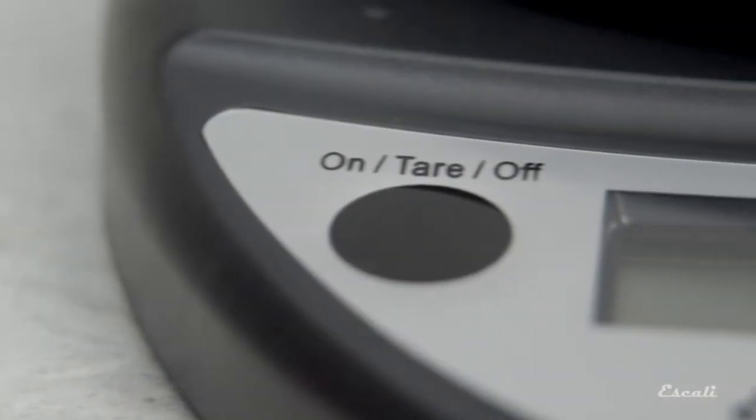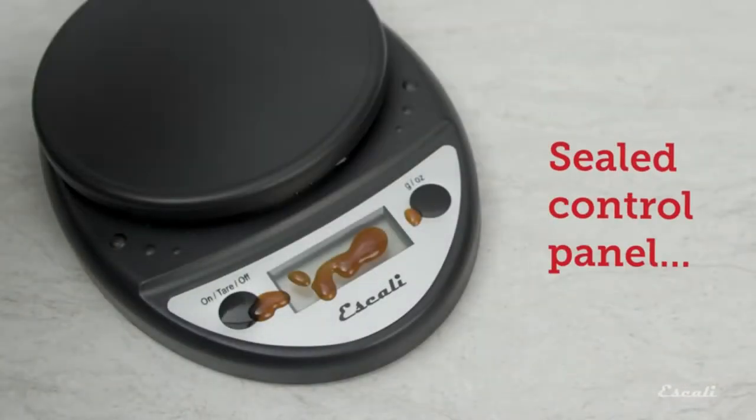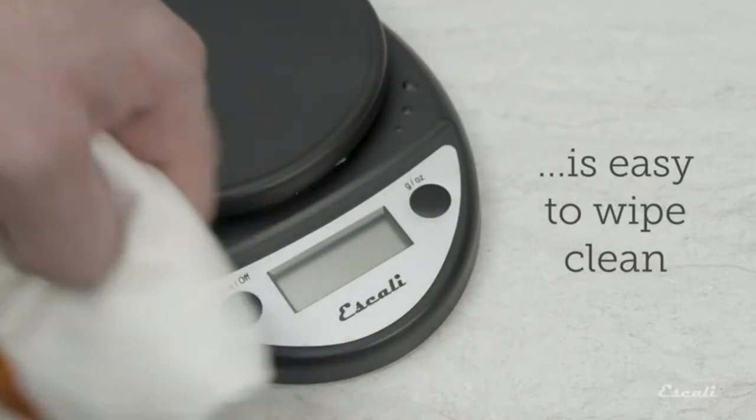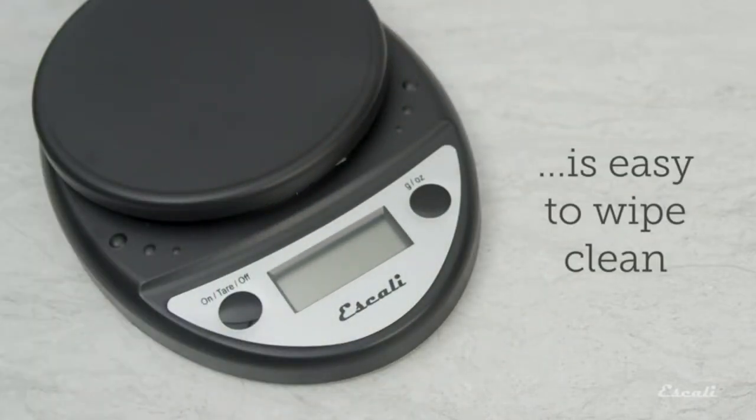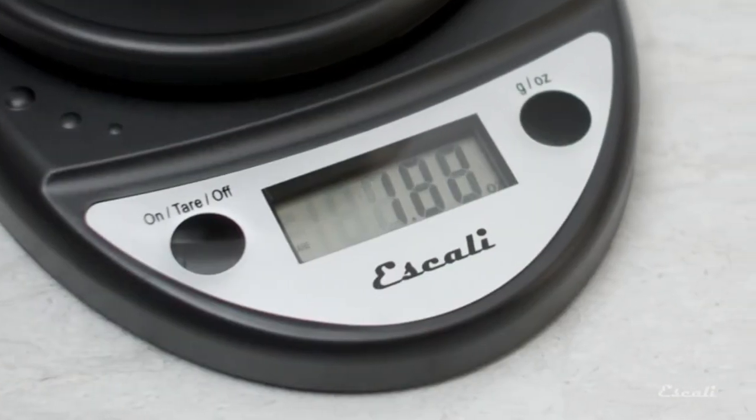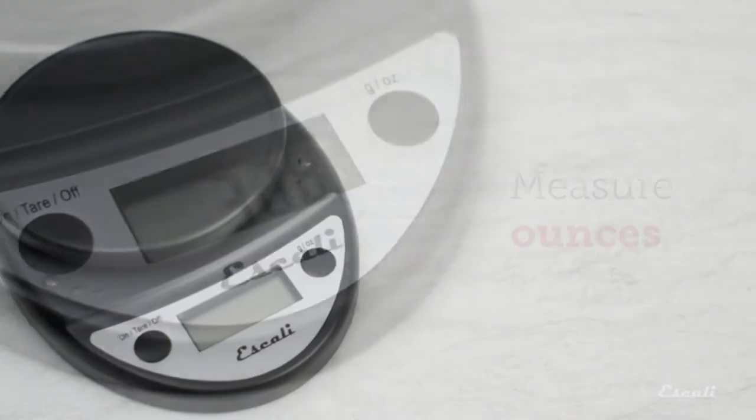Eskali offers a full line of kitchen scales, body scales, timers, and thermometers. Synthesizing contemporary design with unmatched accuracy, Eskali products are sold around the globe and provide information in a choice of standard or metric formats.